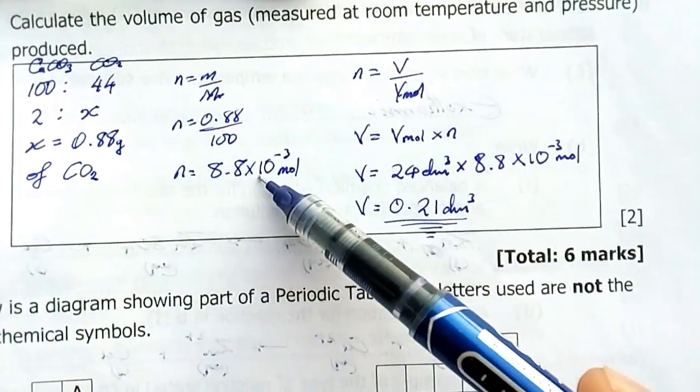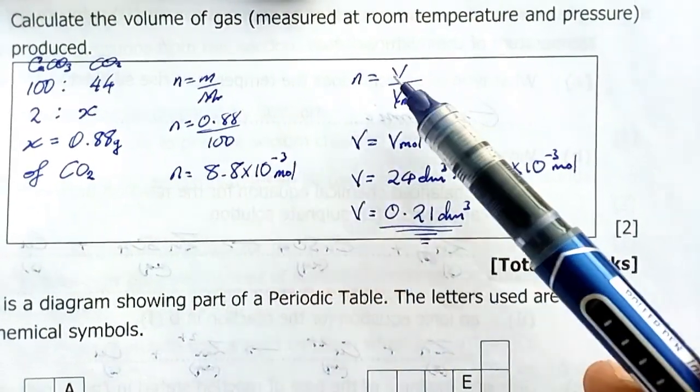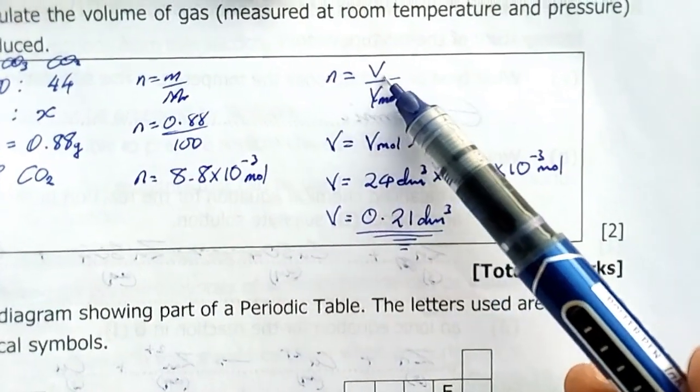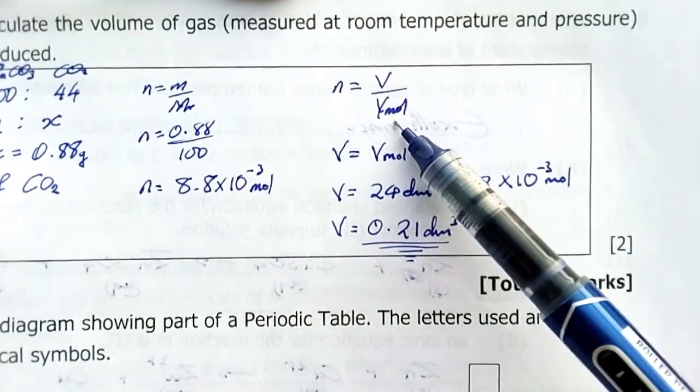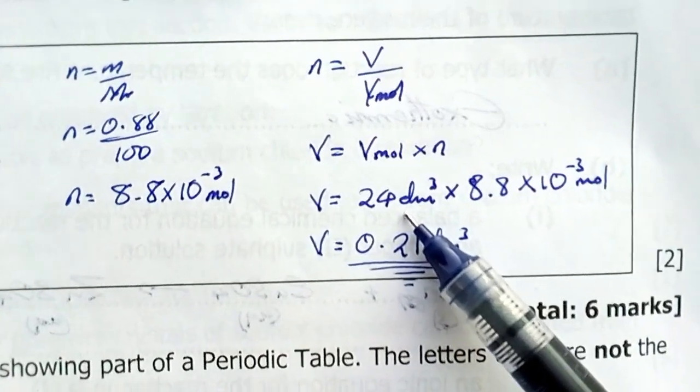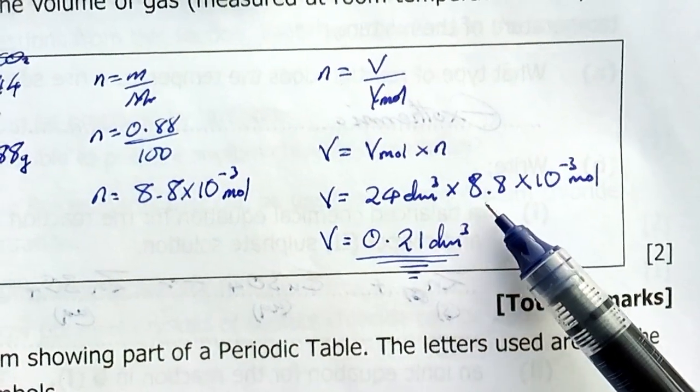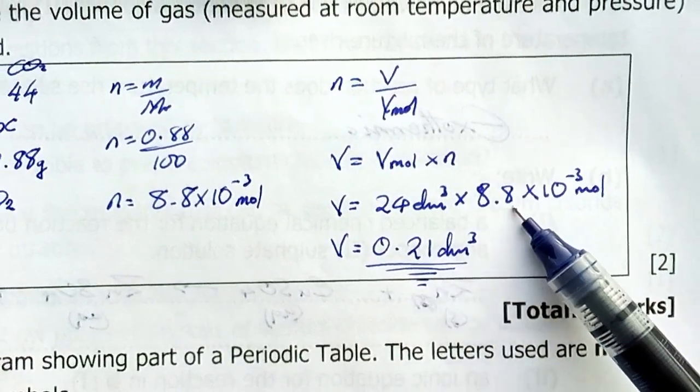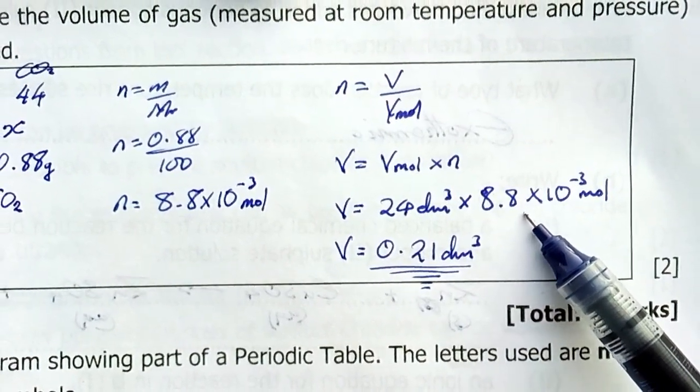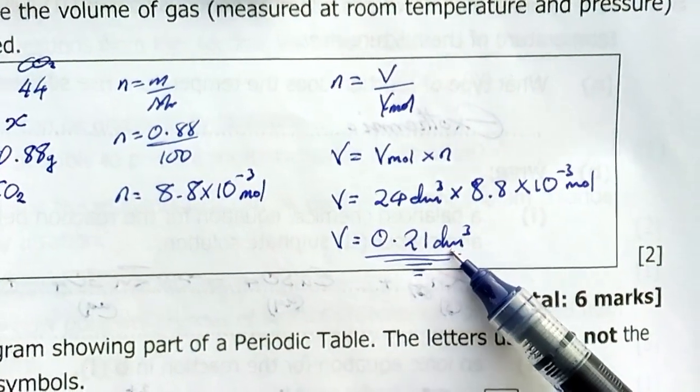Then I convert these moles to volume using this formula: number of moles equals volume over molar volume. I simply apply this 24 decimeters cubed which is my volume at RTP multiplied by number of moles. The number of moles gives me 0.48 decimeters or 0.48 liters of gas was produced in the experiment.